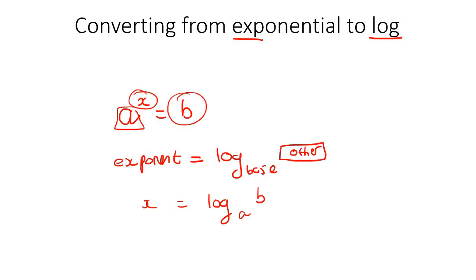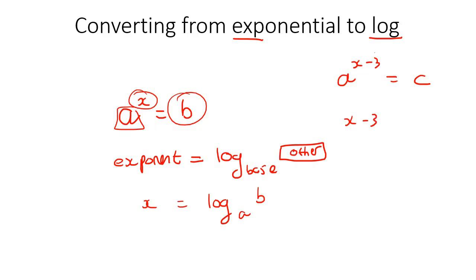What if we have something like a to the power of x minus 3 equals c? You start with the exponent, which is now x minus 3 — not just x, the whole exponent. You then make that equal to log of the base, and then the other number.